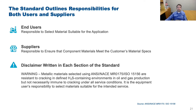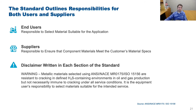The standard also outlines responsibilities for both users and suppliers, which is important to understand. The end user is ultimately responsible for selecting materials suitable to the application. There is a misconception that the vendor is responsible if the customer asks for a NACE-compliant construction — but this is not the case. The vendor can advise on material selection, but the final decision resides with the end user. The vendor is responsible to ensure the material delivered is what the end user specified, and the standard includes a bold disclaimer at the beginning of each section defining this responsibility.